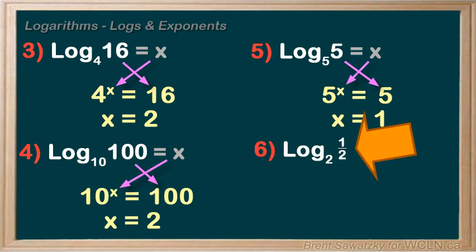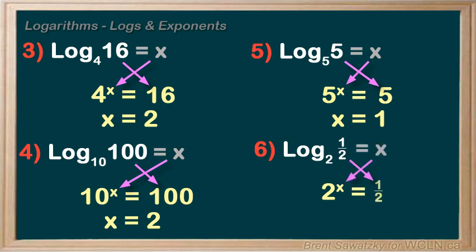Try another. Log base 2 of 1 half. That's a little tricky. Pause and see if we can figure this one out. We're thinking—the power that would cause a base 2 to get to 1 half would be—well, we have to think about a negative exponent here, right? And we recall that 2 to the power of negative 1 would give us that 1 half.